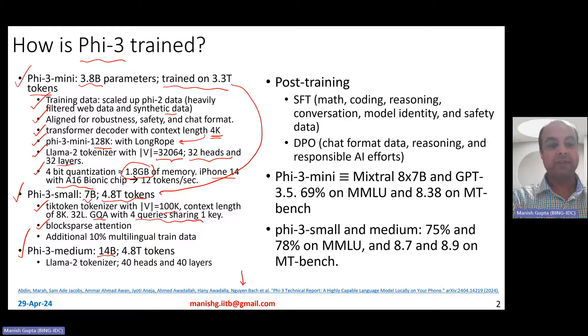It also uses block sparse attention versus dense attention in alternate transformer decoder layers. In this 4.8 trillion tokens, it basically also has like 10 percent multilingual trained data. While Phi-3 mini is for English only, Phi-3 small does have some multilingual training data also, although in this report they do not present any multilingual results.